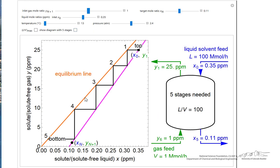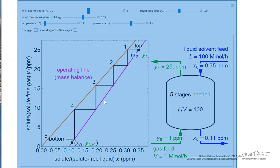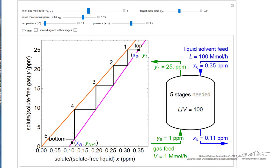The equilibrium line label shows up, and the operating line mass balance label shows up. So this is using the graphical method to determine the number of stages for a stripping column.